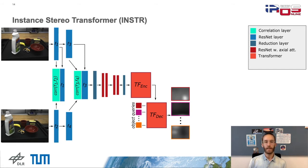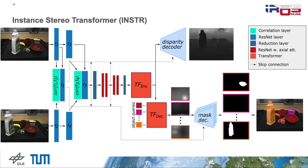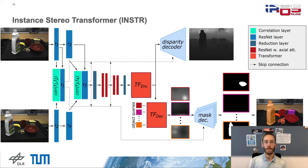Each of them can then be directly upsampled individually and we obtain the binary object masks. Additionally, to guide the network towards 3D shape cues, we predict the disparity of the two stereo images as an auxiliary task. The whole network we call Instance Stereo Transformer, or short InSTAR. It is able to segment objects in an end-to-end manner without any post-processing, which also results in a fast inference time.